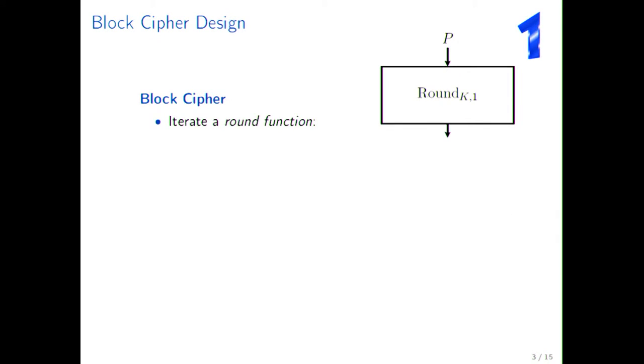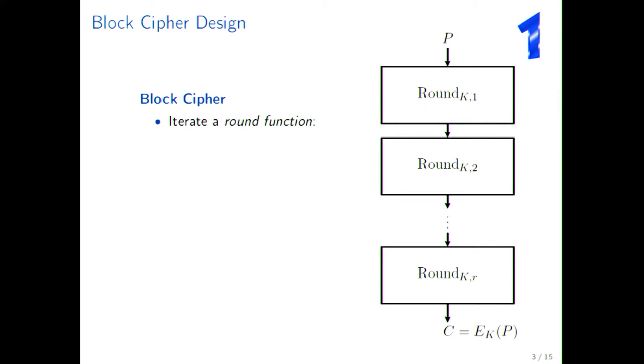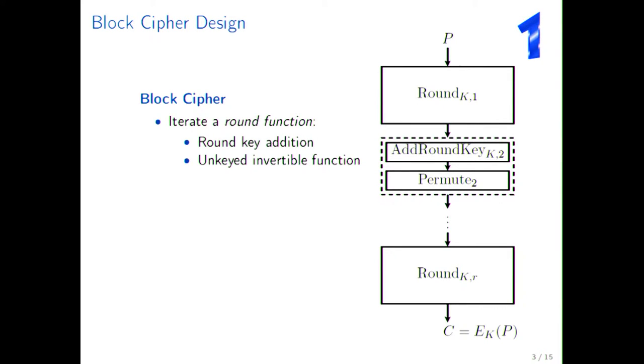But let's start by block cipher design. The way a typical block cipher is constructed is that you iterate a round function. And then if you look at what a round function consists of, this would typically be an addition of a round key and then an unkeyed invertible function. Now, I cannot really think of any block ciphers that don't fit this scheme. Most will follow it, and definitely DES or AES or the typical block ciphers that you may be familiar with.